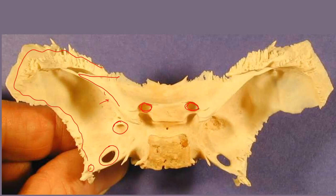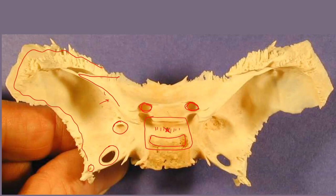All of this structure here is known as the sella turcica. The smooth bottom here, where the pituitary gland would sit, would be known as the hypophysial fossa. And the back of the saddle, so to speak, is the dorsum sellae.